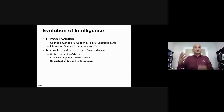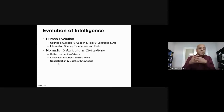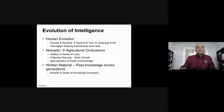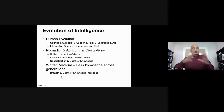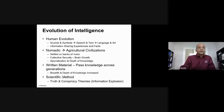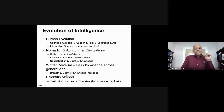Looking at human evolution: we started making sounds and symbols, which became speech, text, language, and art. Information sharing experiences and facts made us more intelligent in the sense of acquiring knowledge. We shifted from nomadic culture to agricultural civilization, settling on riverbanks, establishing collective security, enabling brain growth through specialization. Cobblers, blacksmiths, carpenters — these trades developed and were passed down generation to generation.